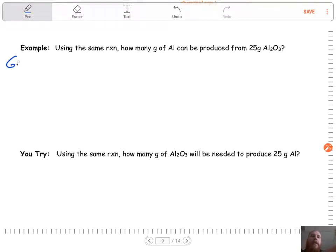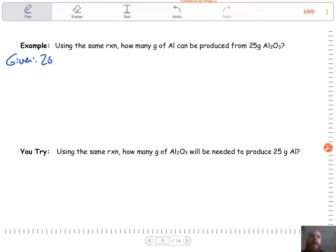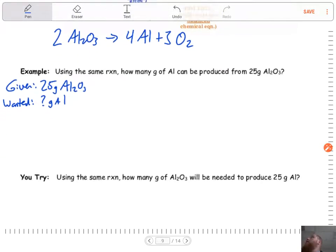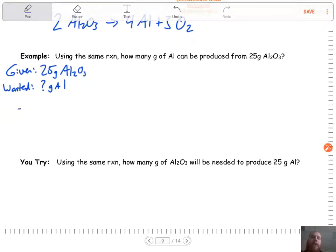So given, again, always start here. Notice how in every single problem that I'm doing for you guys, I'm always starting the same way. You should start that way as well. Identify your given and your wanted. We're trying to figure out how many grams of aluminum can be produced from that. So we're going to use that same reaction that we've been using, two moles of aluminum oxide, breaking down into four moles of aluminum plus three moles of oxygen gas.